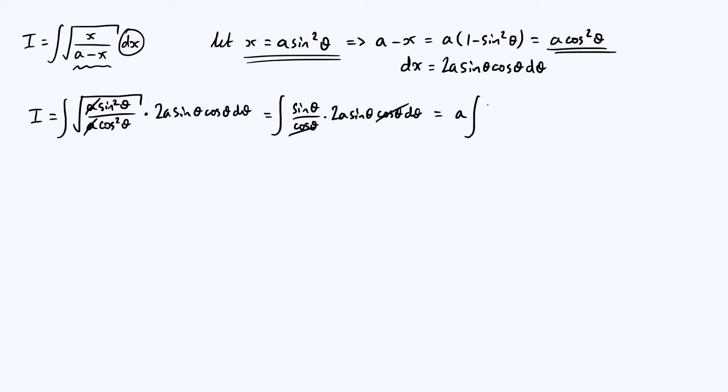We're left with a times the integral of 2 sine squared theta d theta. Now, there is a reason I've left the 2 inside the integrand. That's because there's a trig identity that says cos of 2 theta is 1 minus 2 sine squared theta. We can use that identity to actually do this integral.